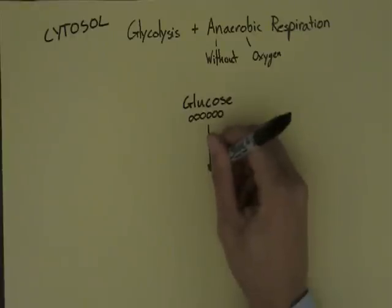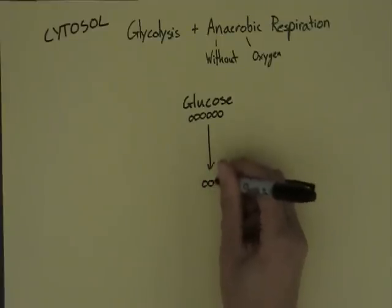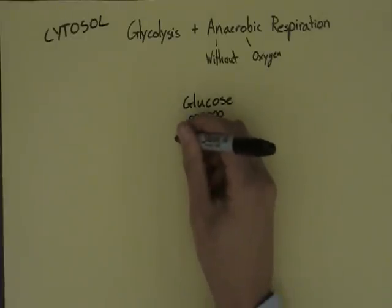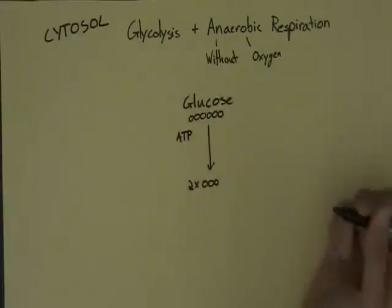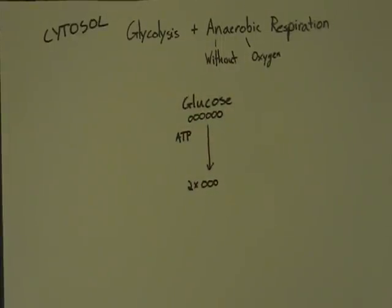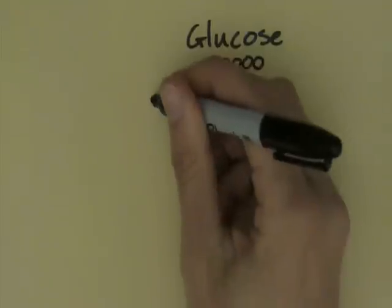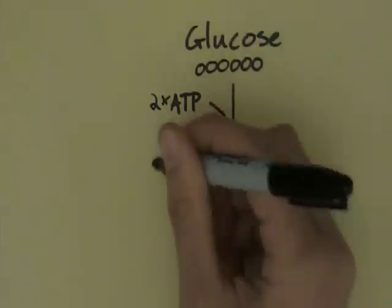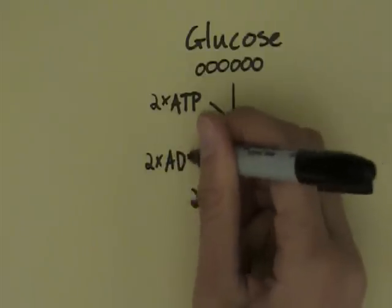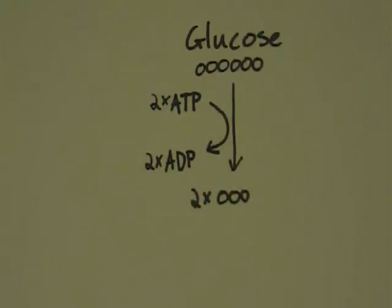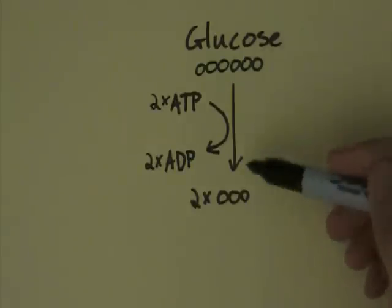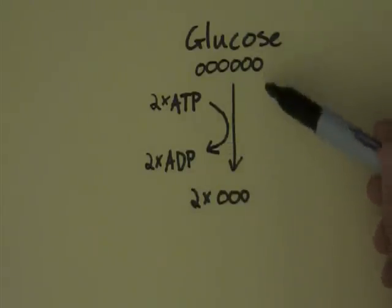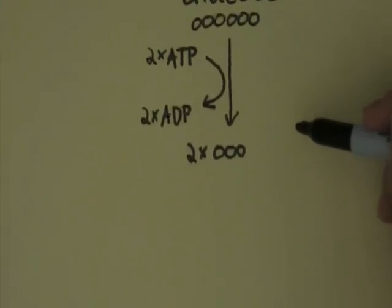These are reacted with a series of enzymes to form two three-carbon molecules. This process requires energy in the form of ATP. Two molecules of ATP—hang on, let me zoom in a little so you can see this clearly—two molecules of ATP are used to allow this to happen, and they're broken down into two molecules of ADP. Now this is a bit strange. We're supposed to be carrying out respiration to release energy, and yet this step requires energy to be put in in order to start the breakdown of glucose.